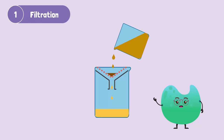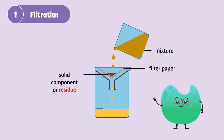Liquid matter passes through the pores of filter paper, while the insoluble solid matter cannot. It is trapped on the surface of the filter paper. The mixture is separated into its components, that is, solid components and liquid components.